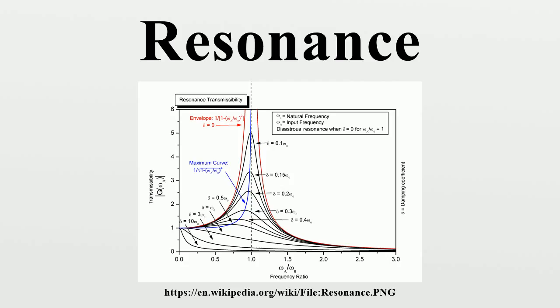A familiar example is a playground swing, which acts as a pendulum. Pushing a person in a swing in time with the natural interval of the swing makes the swing go higher and higher, while attempts to push the swing at a faster or slower tempo produce smaller arcs.